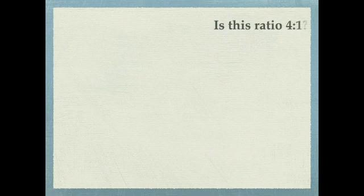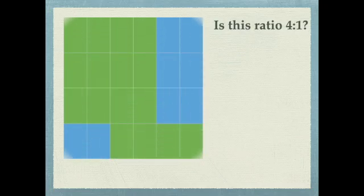So let's start off with just a picture. I want you to figure out if this picture has a ratio of 4 to 1. That means are the green quadrilaterals in the ratio of 4 to 1 to the blue quadrilaterals?